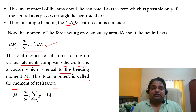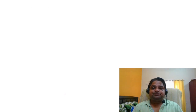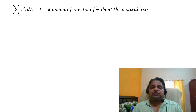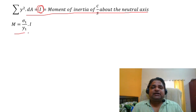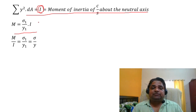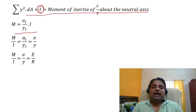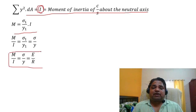The section modulus is important for design. If a beam has a non-uniform cross section or varying loading along its length, the section modulus tells us which section is under higher stress intensity. For example, in a cantilever beam, the maximum bending moment occurs at the fixed end even though the load is at the free end. So the material near the fixed end must have a higher moment-resisting capability.